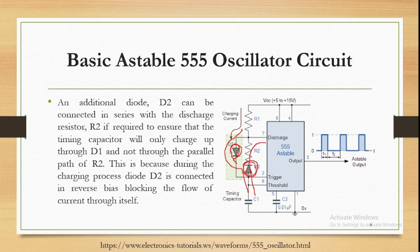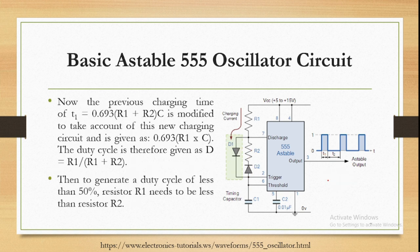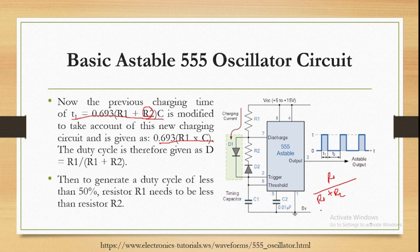For charging, D2 is reverse-biased; for discharging, D1 is reverse-biased. So T1 equals 0.693 × R1 × C and T2 equals 0.693 × R2 × C. The new duty cycle formula becomes R1 divided by (R1 + R2). If R1 equals R2, we get exactly 50 percent duty cycle.